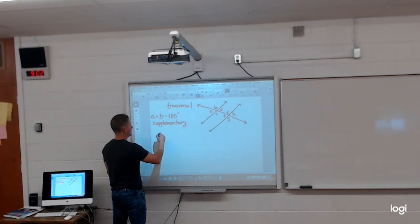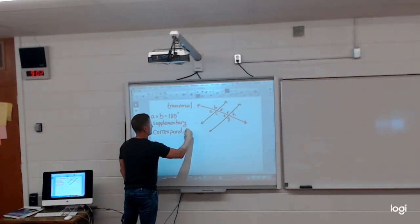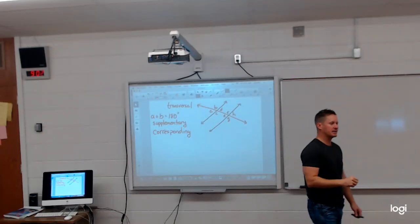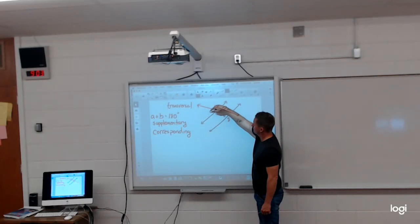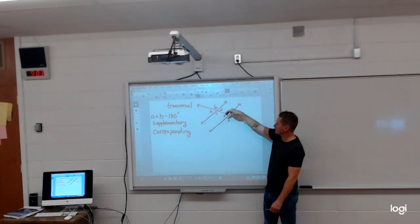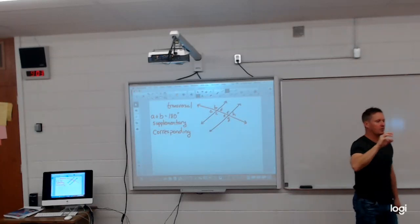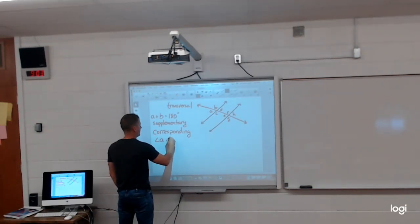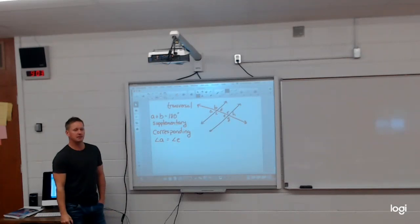Now let's match a few up here. Corresponding angles are what I refer to as two angles that are in the exact same position. So if you were to look at this right here as a quadrant of four, A, B, C, and D, and this is the second quadrant of four, corresponding angles are the ones that are in the exact same spot on the two quadrants. So for example, angle A and angle E are corresponding angles. That means they're equal to each other.